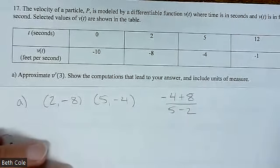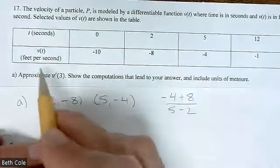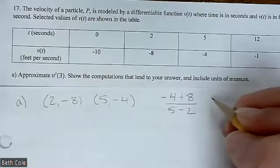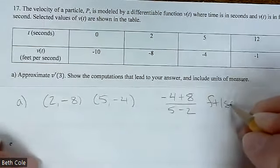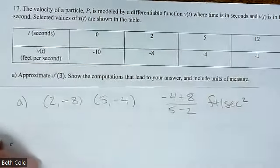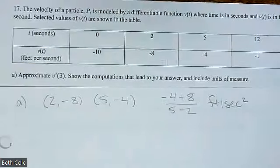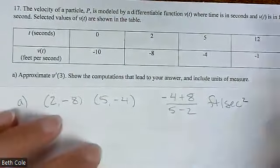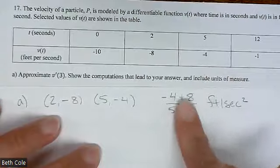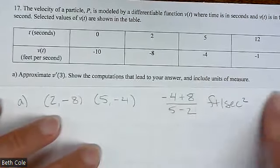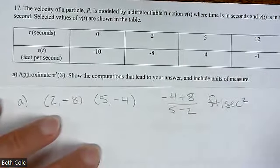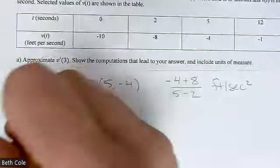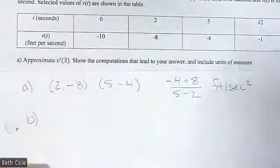It does say indicate units of measure. This is in feet per second, so if we did a rate of that, it would be feet per second squared, or feet per second per second. That is usually only worth one point — just for the answer and units — so you would either get it or not.